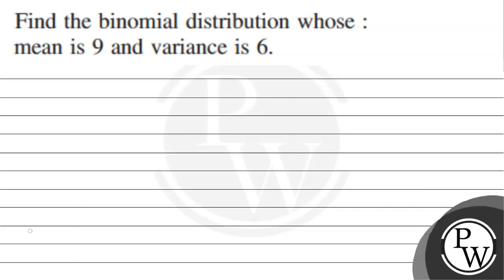Hello, let us read the question. The question says, find the binomial distribution whose mean is 9 and variance is 6.